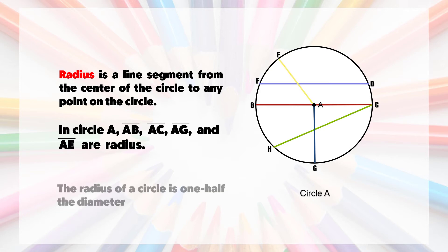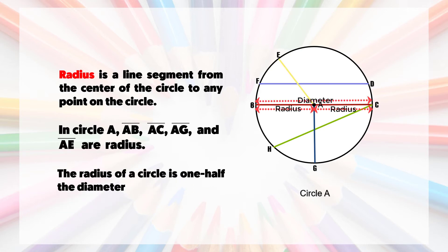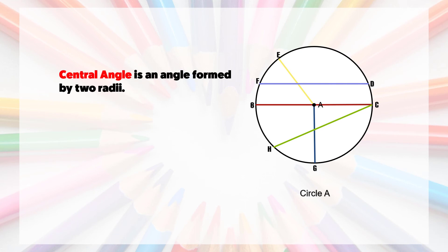Remember, a radius of a circle is one-half the diameter. Number four, central angle: It is an angle formed by two radii.